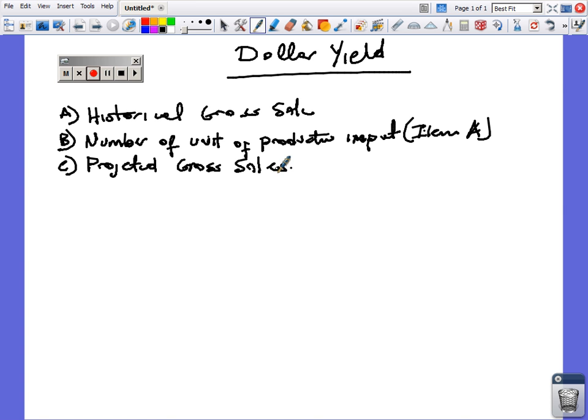In this unit we will use the same numbers as we did in the first. So we had historical gross sale of $30,000, we have units used as 500 of item A, and we had projected gross sale or revenue of $25,000.